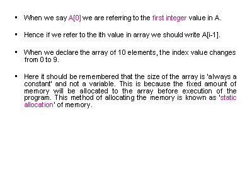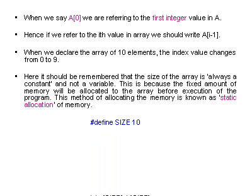Here we should remember that the size of the array is always a constant and not a variable. This is because a fixed amount of memory will be allocated to the array before execution of the program. This method of allocating memory is known as static allocation. Here you can see that we have defined size as 10 and then declared arrays — integer a[size] and b[size]. The advantage is that if we want the program to run for an array of 200 elements we need to change just the define statement.